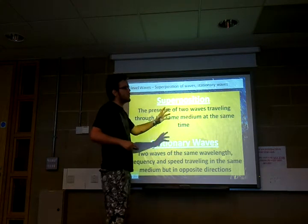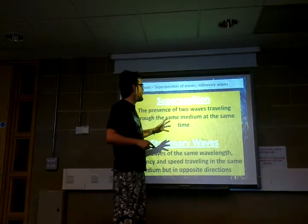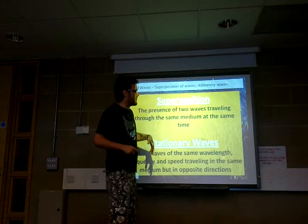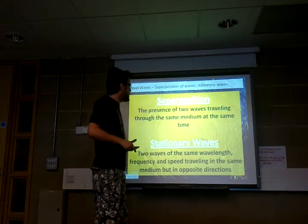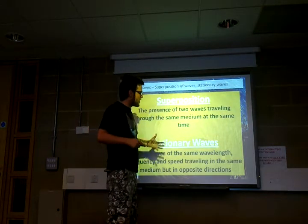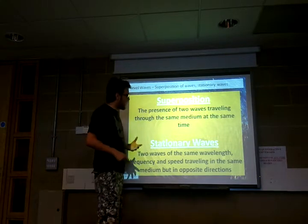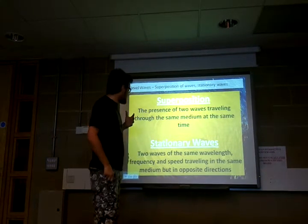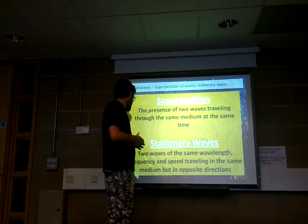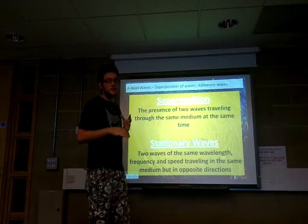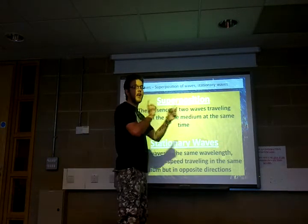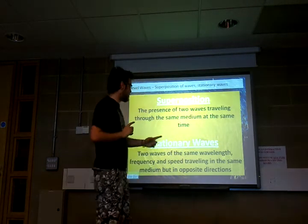With superposition, the waves can be travelling in the same direction, they can be different frequencies, they can be different speeds, but they're travelling very close together. With stationary waves, they have to be following the same path, they have to have the same wavelength, the same frequency, the same speed — but most importantly, they have to be travelling in opposite directions.